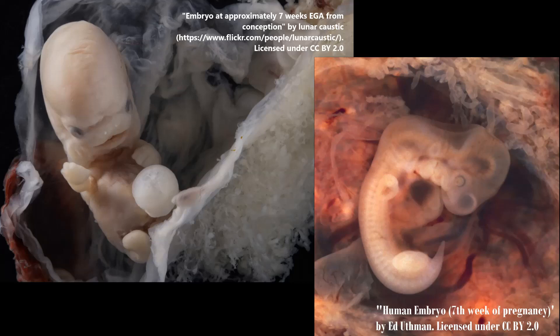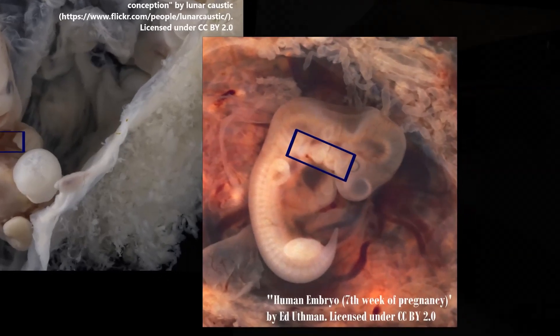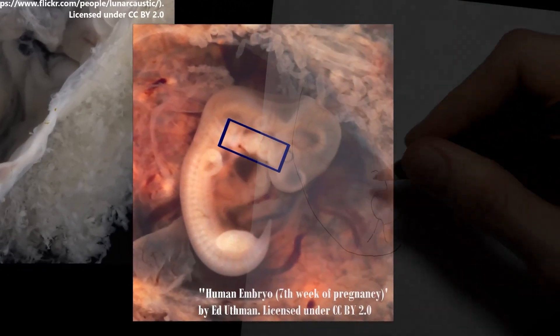However, when we look at an embryo, we can see just caudal to the head, on what would be the anterior face of the neck, a series of sacs where the pharynx would be. These are the pharyngeal arches with its respective pharyngeal grooves and pharyngeal pouches. Each of these is going to develop into a different structure, from the head to the mediastinum.